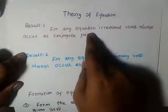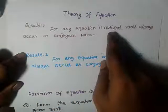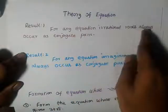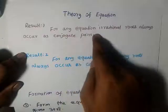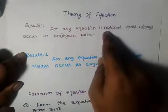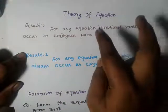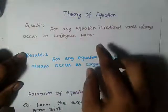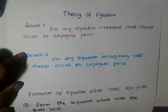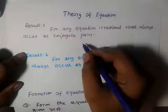For any equation, irrational roots always occur as conjugate pairs. That is, irrational roots are always present as conjugate pairs. For example, now,